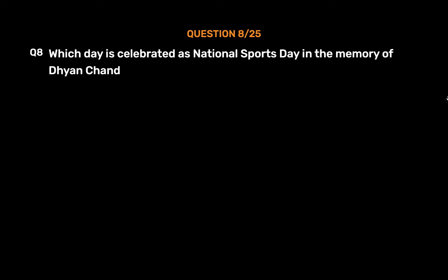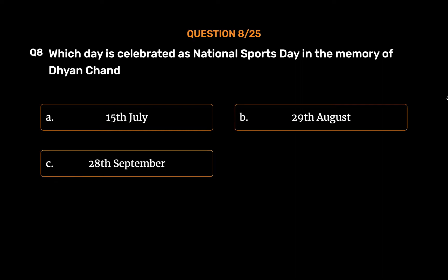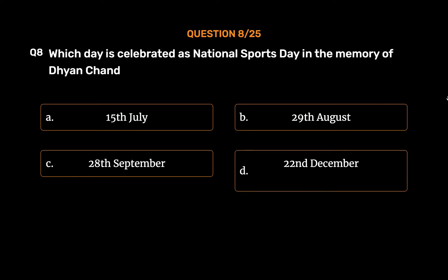Question No. 8: Which day is celebrated as National Sports Day in the memory of Dhyan Chand? Option A: 15th July. Option B: 29th August. Option C: 28th September. Option D: 22nd December. The correct answer is Option B: 29th August.